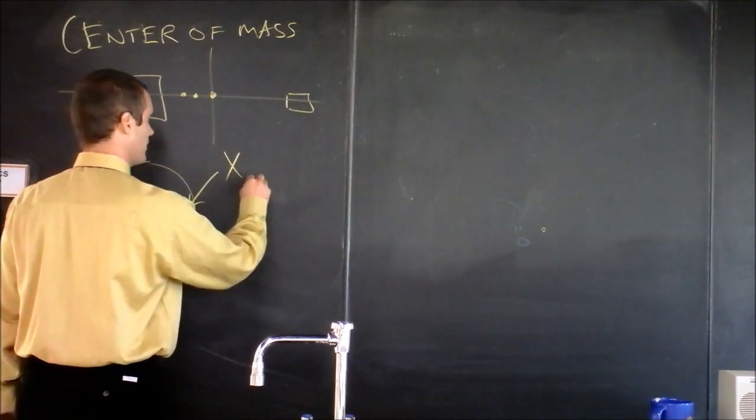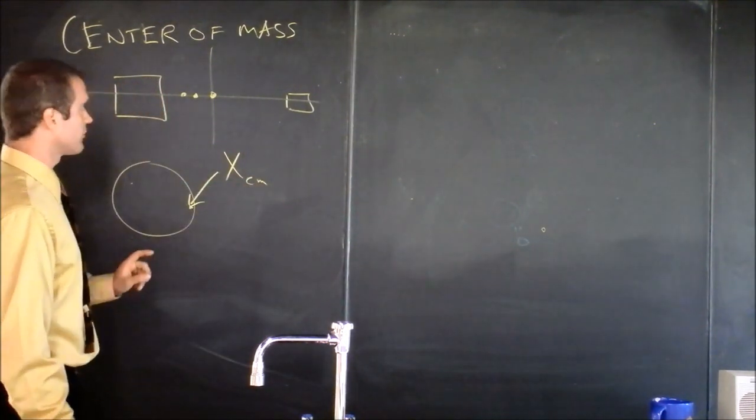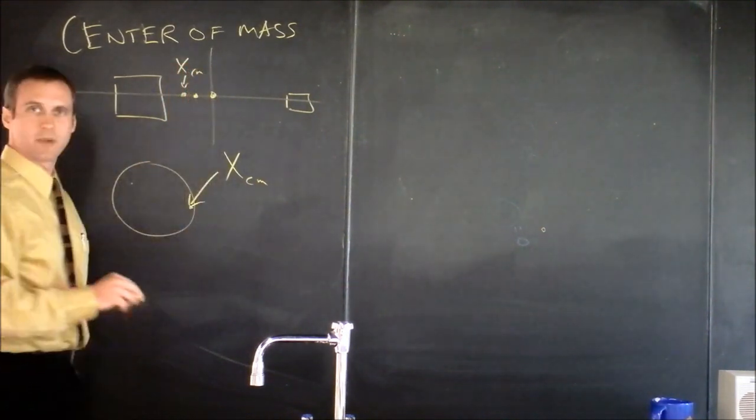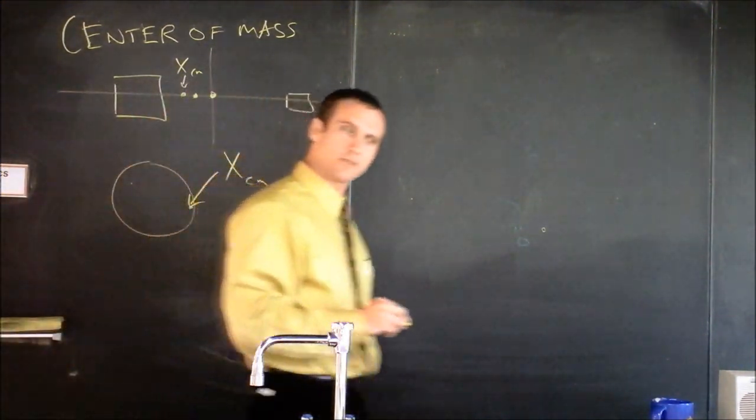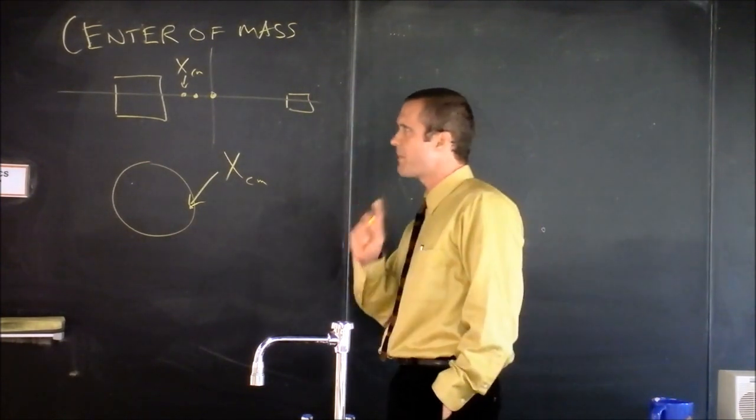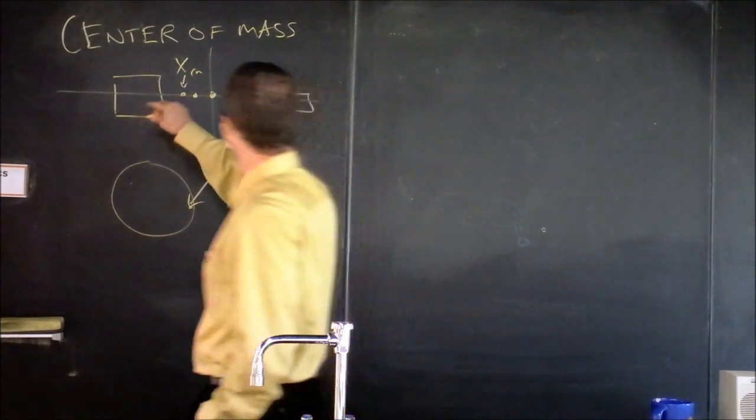And we'll call that the position of the center of mass. It's the X position of the center of mass in the system. This might be the X position of the center of mass of the system. How do we find it? We add up all the mass and we divide by the total mass. But we're not just adding up all the mass, we're adding up the mass at its position. So let's try to make this a little bit more concrete.